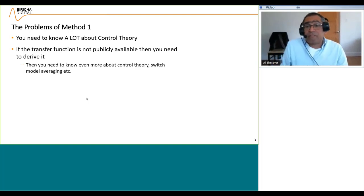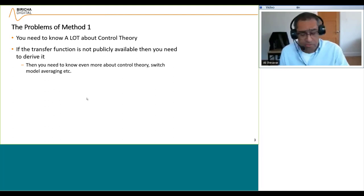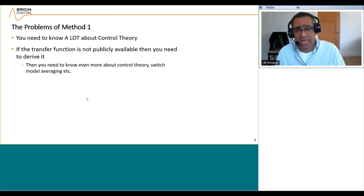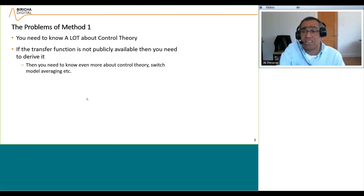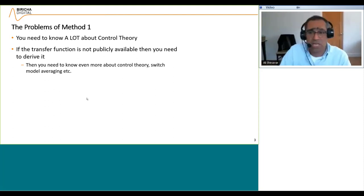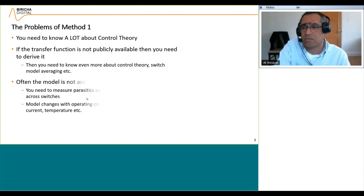If the transfer function is not publicly available then you have to derive it yourself, which makes it even more complicated. If you're designing a flyback or a buck you can find the transfer function on the internet, but if you're doing some resonant converter or something uncommon, the transfer function may not even be available. Then you need to know even more control theory and switch-mode modeling in order to get the transfer function.